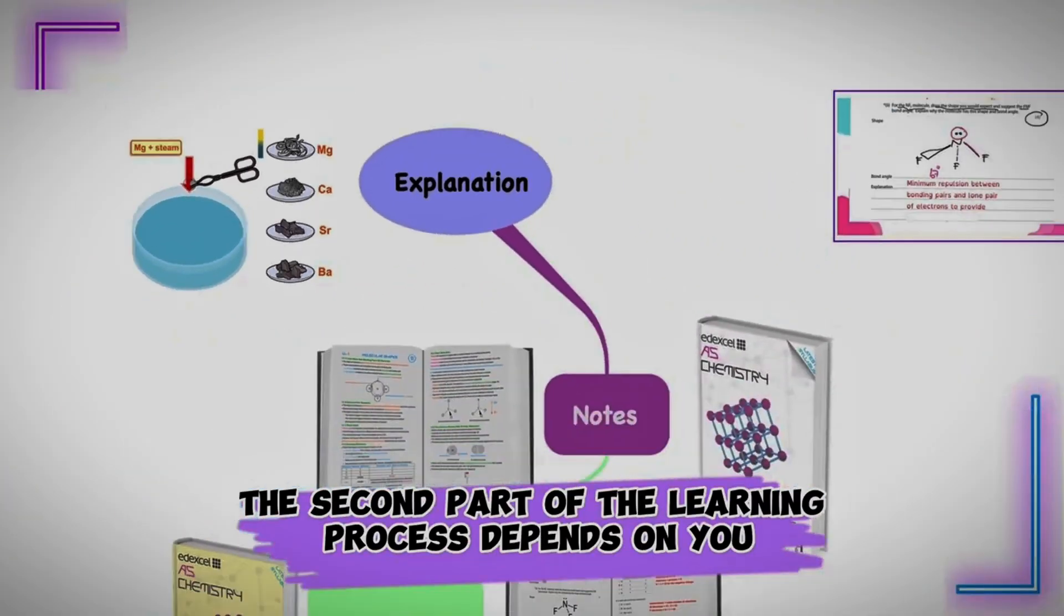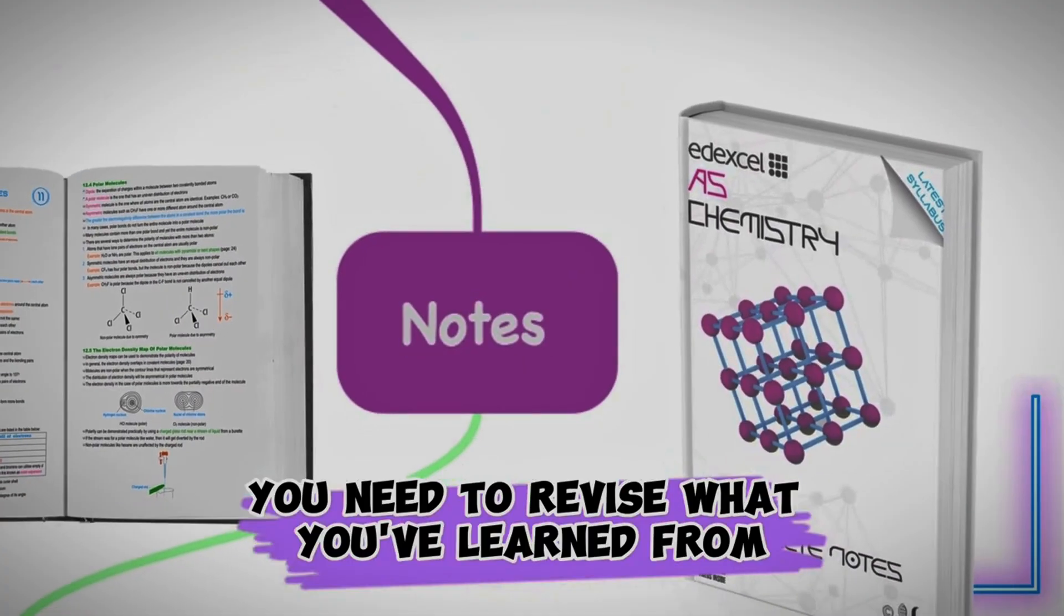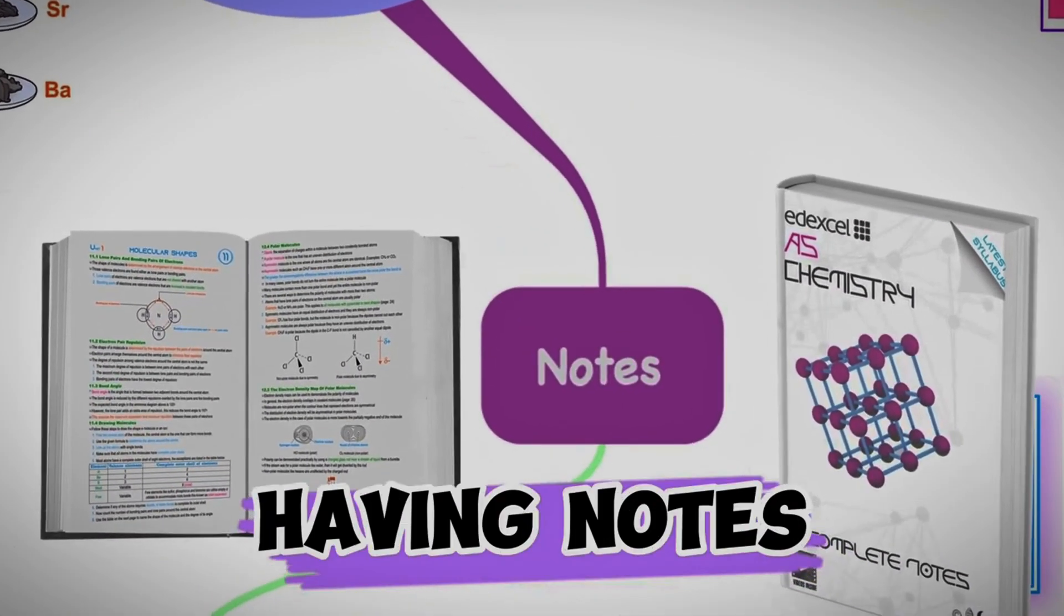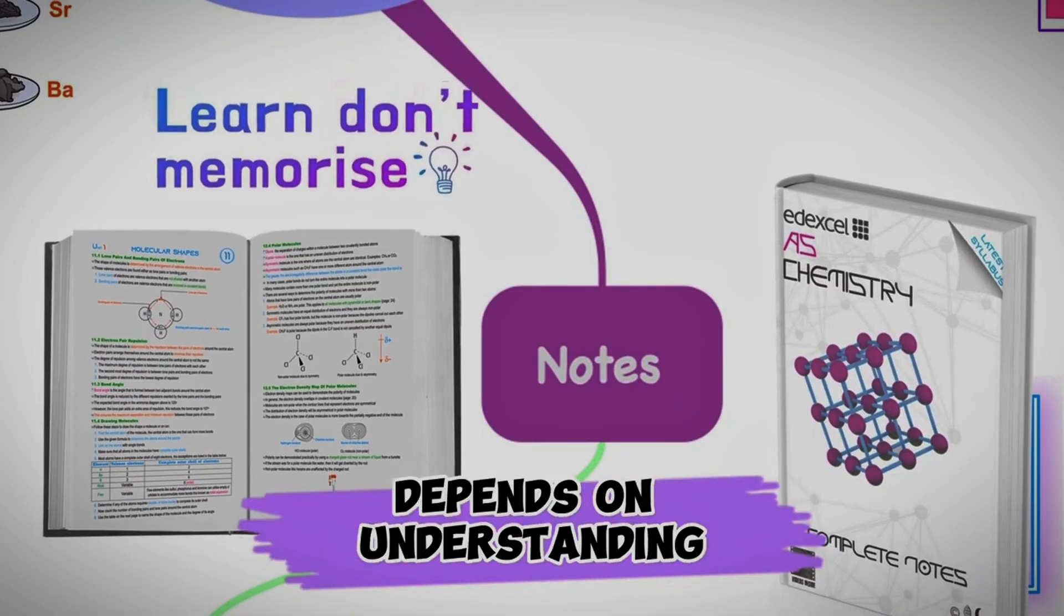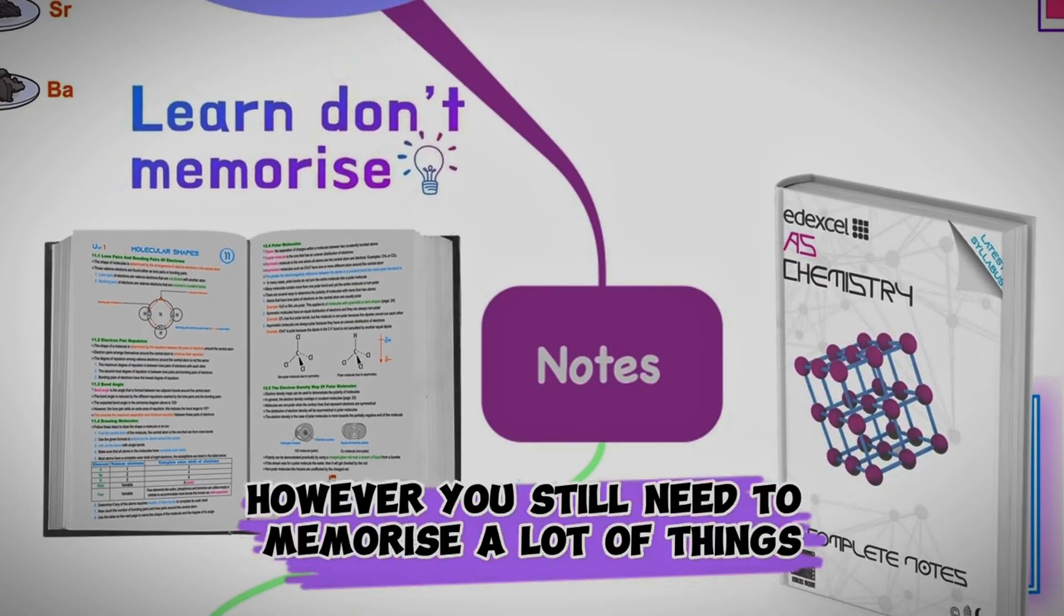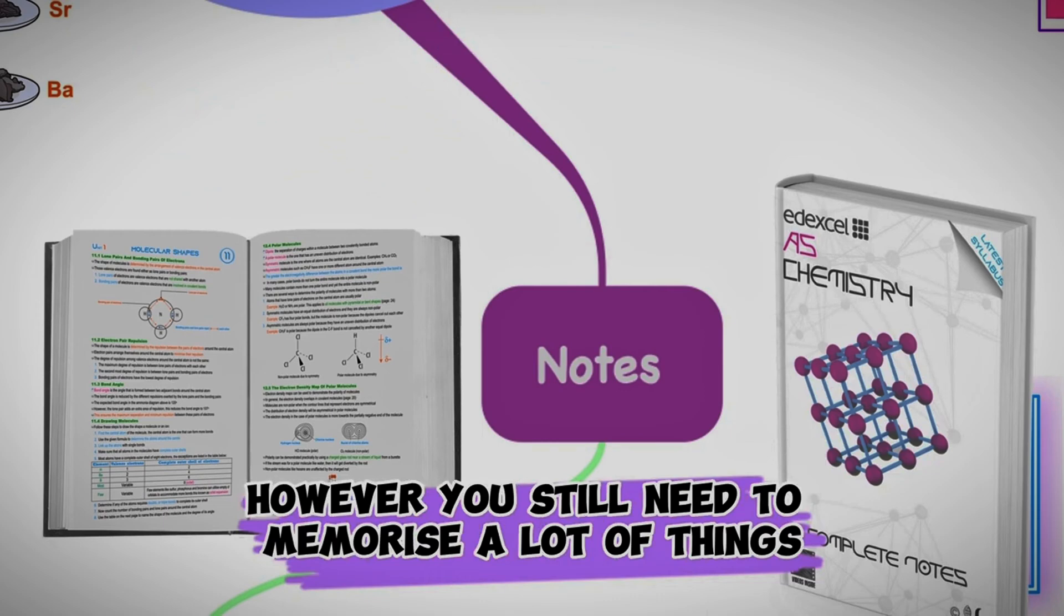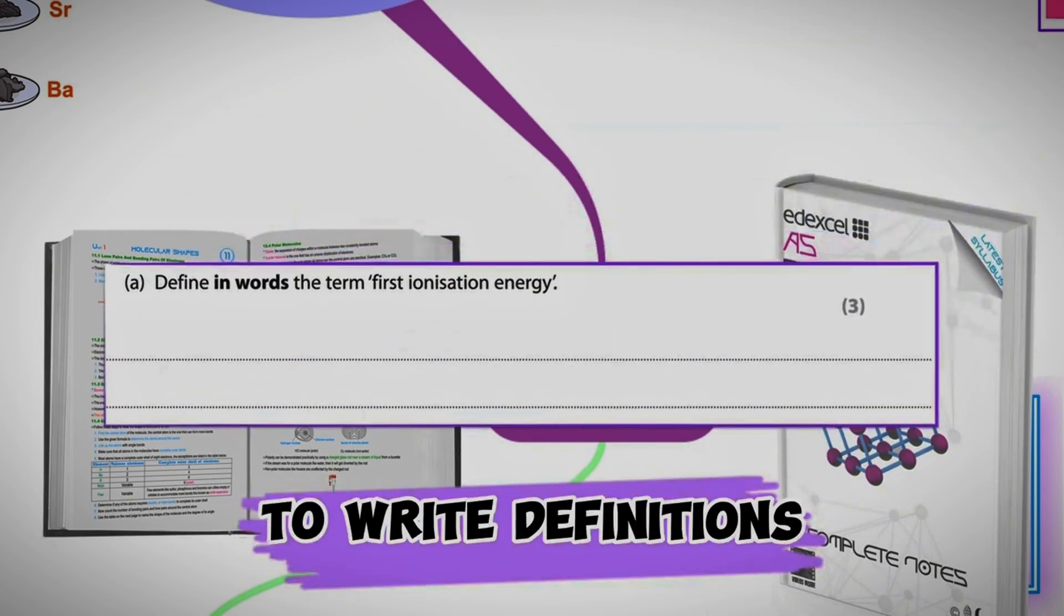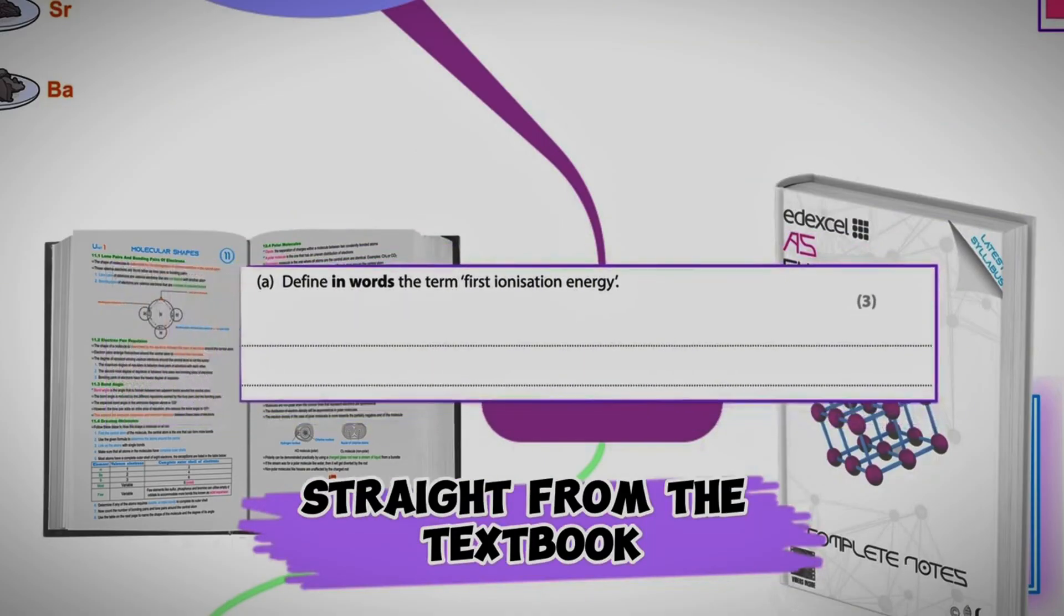The second part of the learning process depends on you. You need to revise what you've learned from your teacher. This usually requires having notes. Chemistry largely depends on understanding. However, you still need to memorize a lot of things, including definitions. They do ask you a lot of times to write definitions straight from the textbook.